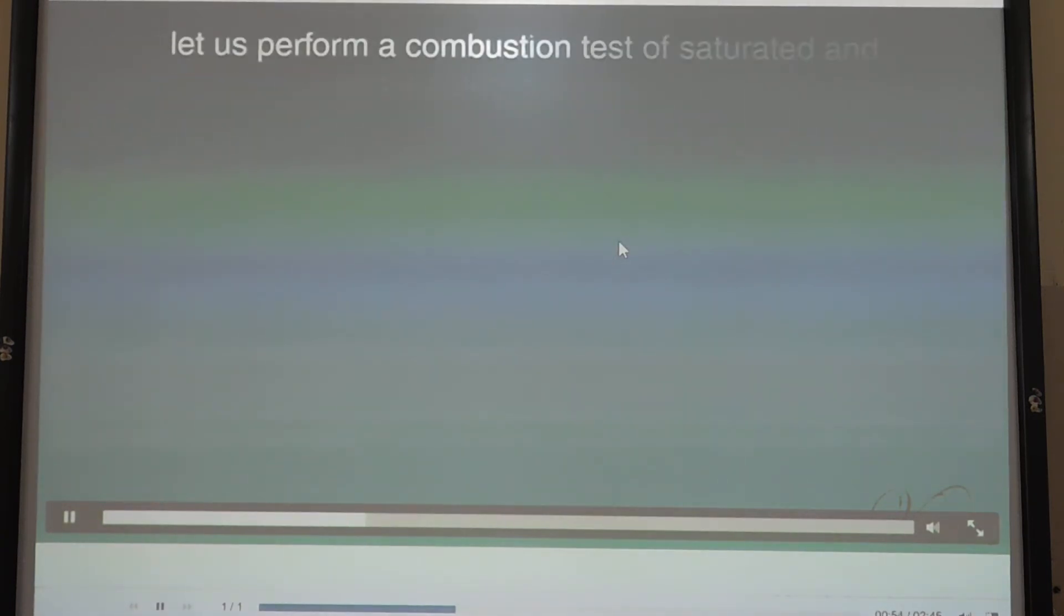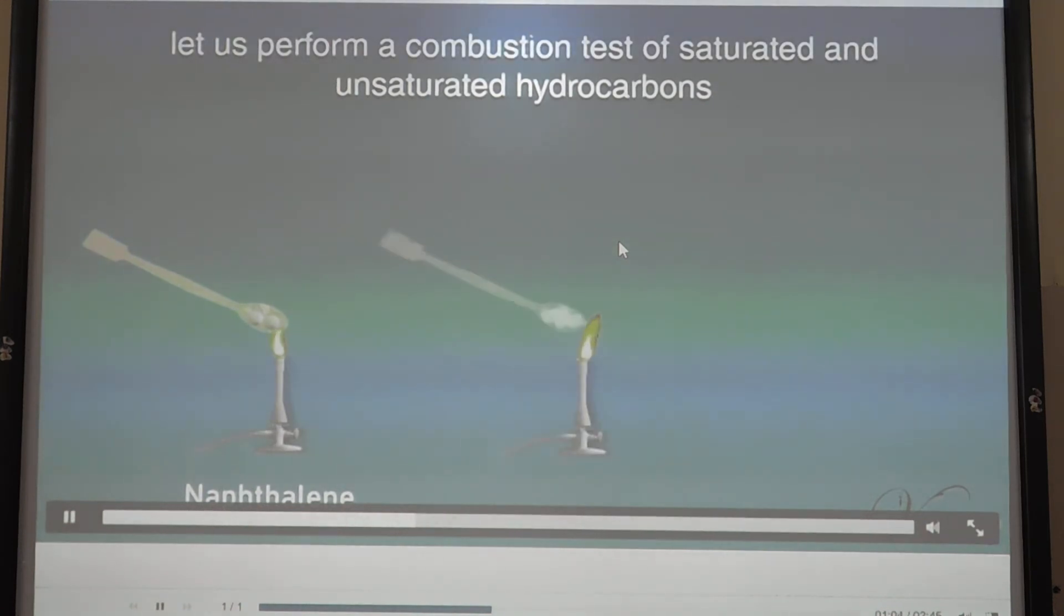Let us perform a combustion test of saturated and unsaturated hydrocarbons. Take some hydrocarbons - naphthalene, camphor and ethanol on a spatula. Carefully ignite each sample with a match. Observe the flame and color of the smoke for each sample. The result: camphor and naphthalene will give a yellow sooty flame because they are unsaturated, while alcohol will give a blue non-sooty flame because it is saturated.